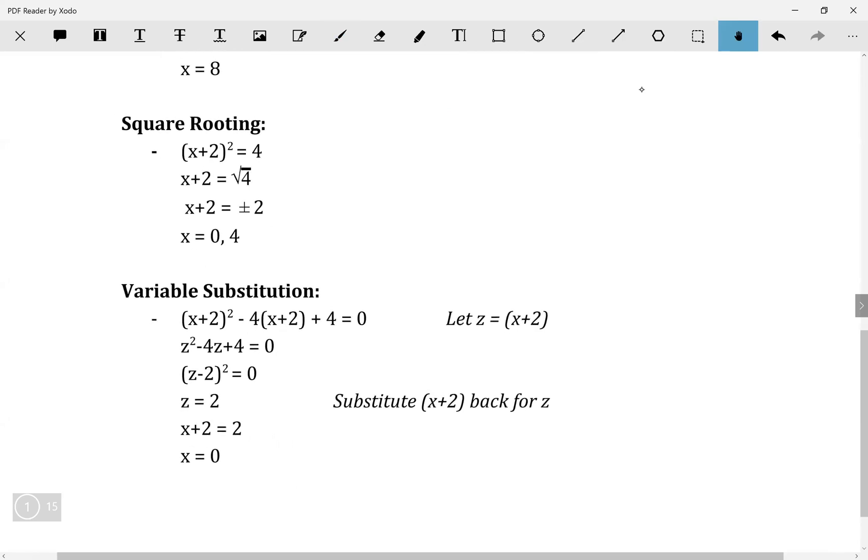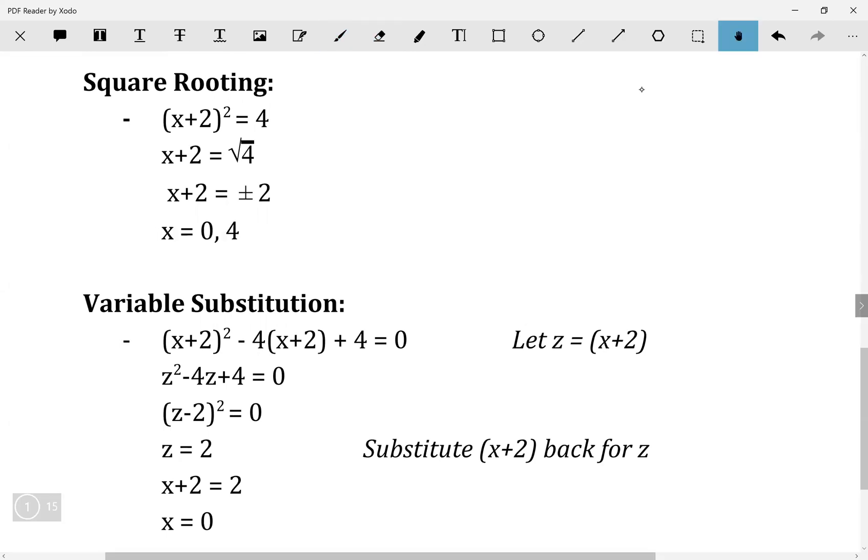Next, we have square rooting. Let's say I have (x+2) squared equals 4. In that case, I square root both sides, so x plus 2 equals square root of 4. And square root of 4 is plus or minus 2. Make sure it's not just plus 2. So I have x plus 2 equals plus or minus 2. Wait, sorry, here it's negative 4, not positive 4, that's a mistake right there. Yes, it's 0 comma negative 4, because if x plus 2 equals positive 2, you have x equals 0. Or if x plus 2 equals negative 2, you have x equals negative 4. Sorry, that's not supposed to be a negative sign.